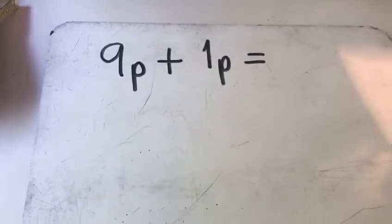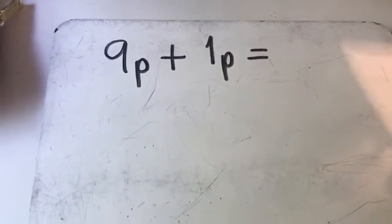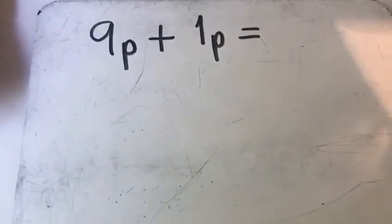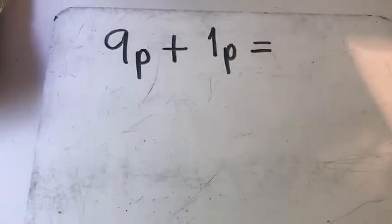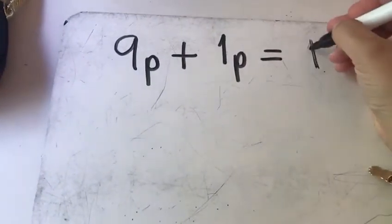Well done. 9 and 1 make 10. So I can do that really quickly in my head without even needing a number line or a hundred square. 9p plus 1p makes 10p.